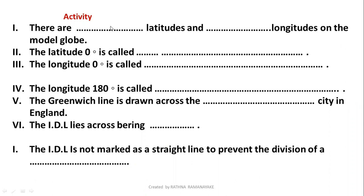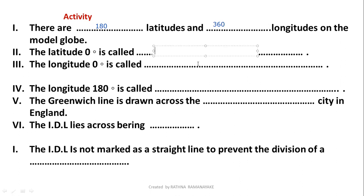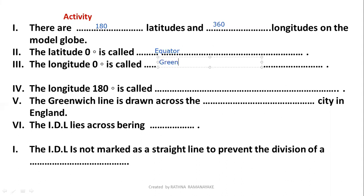How many latitudes are there on the model globe? There are 180 latitudes and 360 longitudes. Latitude zero is called the equator. Longitude zero is called the Greenwich Meridian, also known as the Prime Meridian.